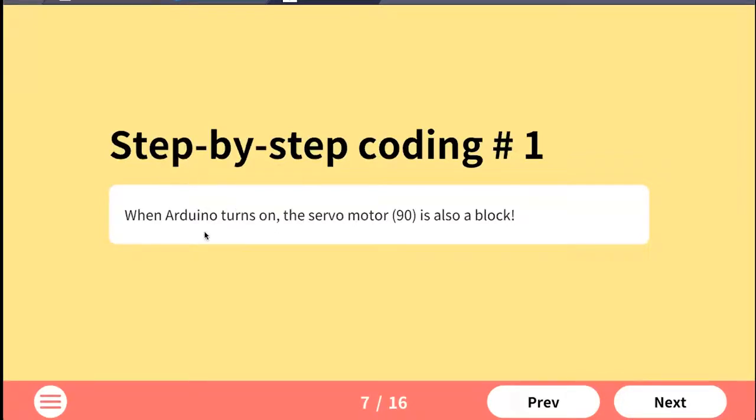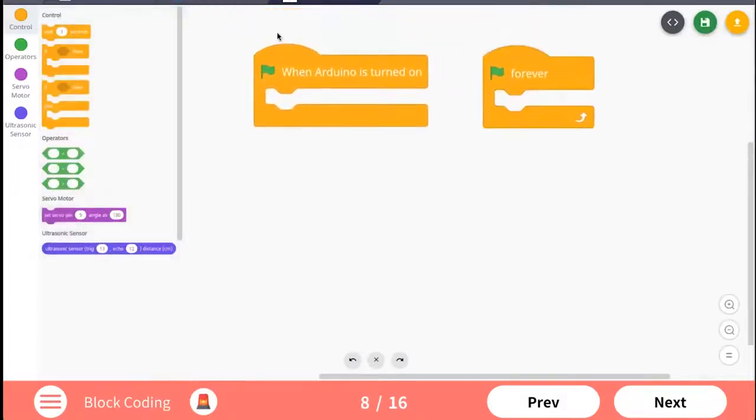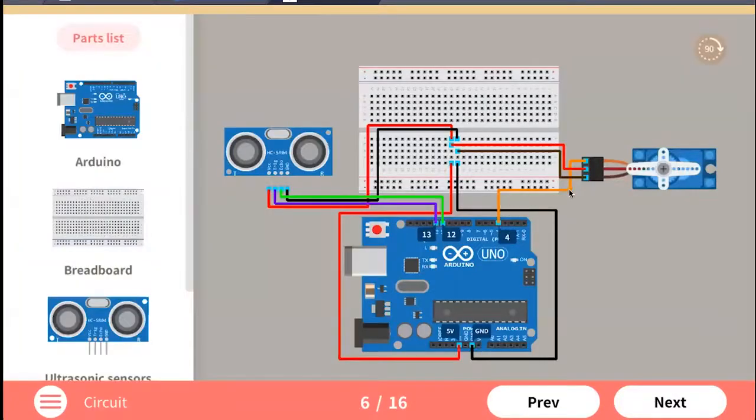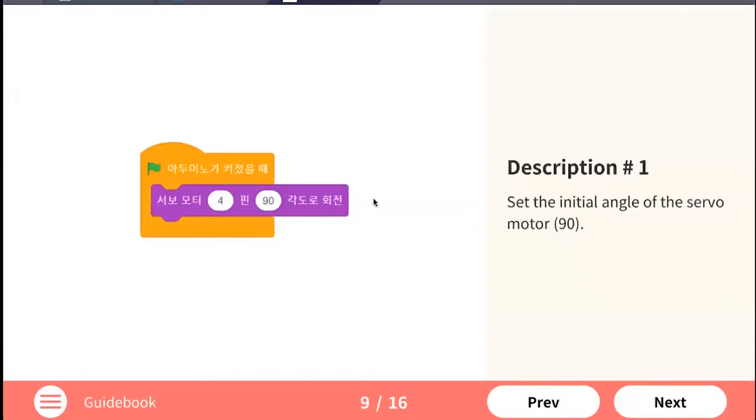First task: do the block coding so that when the Arduino board is turned on, rotate the servo motor by 90 degrees. Let's try it. Which block should we use? We should use this one. When it's turned on, we want the servo motor. Remember, we connected the servo motor to number four pin, so make sure you keep those numbers consistent and angle to be 90. This is a default setting. When this is on, the angle of the motor will be at 90 degrees. Let's check the answer. There we go, same answer.